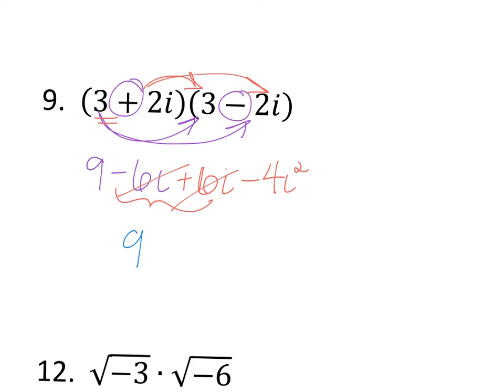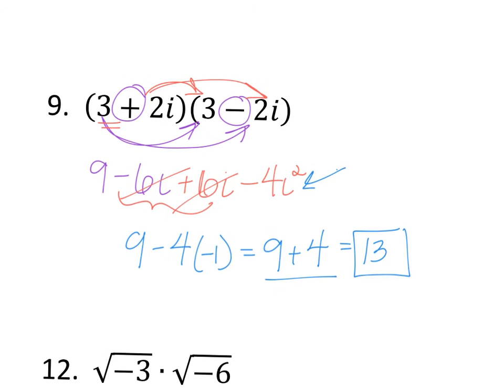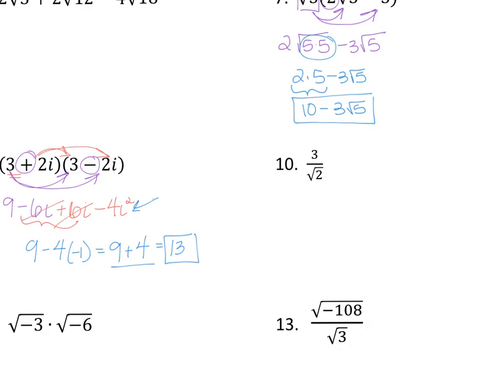So, then I'm going to get 9 minus 4i². But, I know i² equals negative 1. So, I'm just going to replace that. Well, negative 4 times a negative 1 gives you a positive 4. And, 9 plus 4 is indeed 13. So, that would be your answer. There's no more i's. There's no more simplifying. It is just number 13.